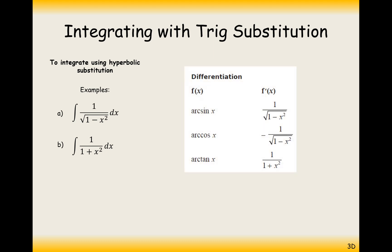What we've just seen in the previous video is that the derivative of arcsin is equal to 1 over the square root of 1 minus x squared, which is exactly what we're integrating here. And we all know that the reverse process of differentiation is integration, so the answer must equal arcsin x. Similarly with 1 over 1 plus x squared, the opposite of differentiating is integration, so if you integrate the right-hand side, you must get the left-hand side.